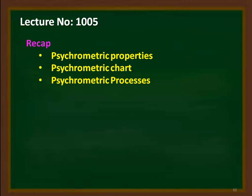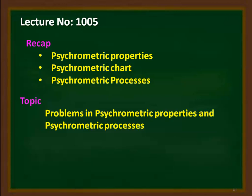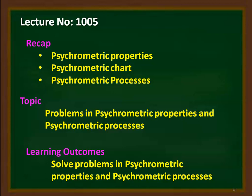We studied psychrometric processes like sensible heating, cooling and dehumidification, heating and humidification, chemical dehumidification, and adiabatic mixing. In the previous fourth lecture, we solved a few problems. Here we continue with more problems. The topic is: solve problems on psychrometric properties and psychrometric processes. At the end of this lecture, the student will be able to solve problems on psychrometric properties and processes.